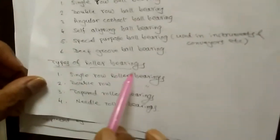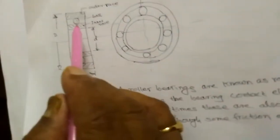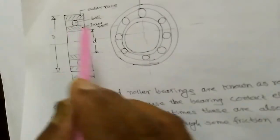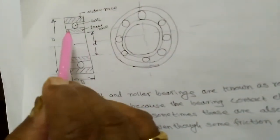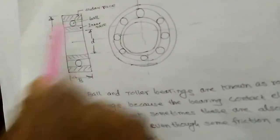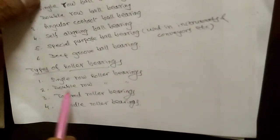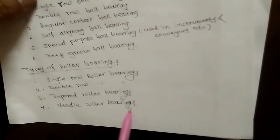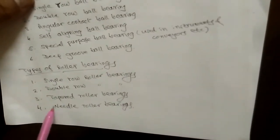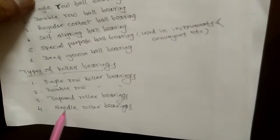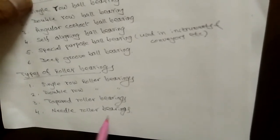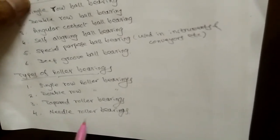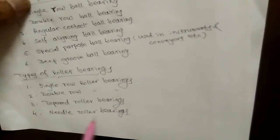For types of roller bearings, we have single row roller bearings where instead of a ball, we have a smaller roller like a small chalk piece. There are also double row roller bearings, tapered roller bearings, and needle roller bearings. In the needle roller bearing, the diameter is very, very small compared to the length — like a needle — hence it is called a needle roller bearing.